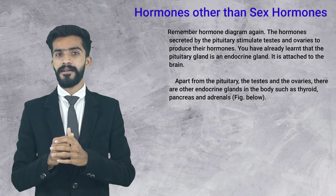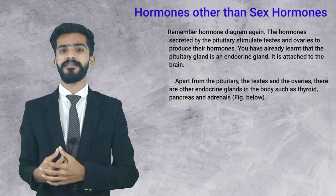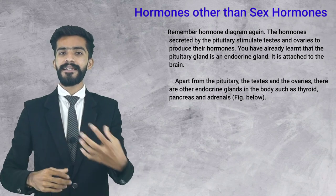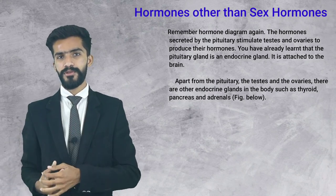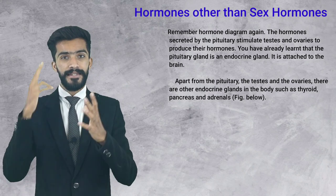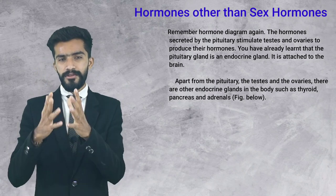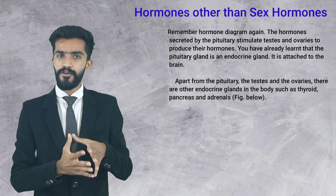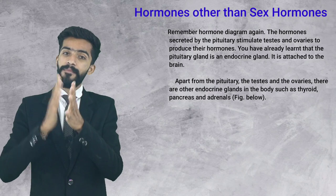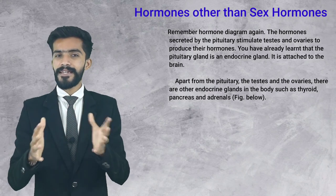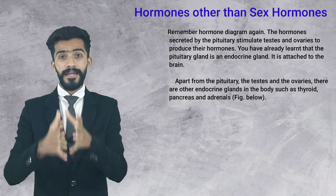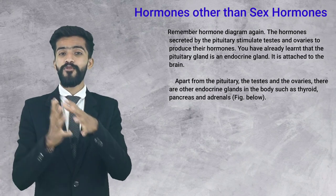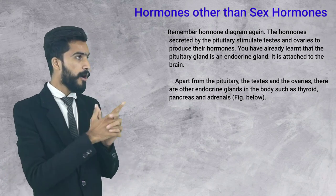Our pituitary gland, by releasing hormones, gives orders to other glands — telling the testes to produce testosterone and the ovaries to produce estrogen (ova). This is what the pituitary gland does. Let's recall what we have studied before, and remember it clearly.